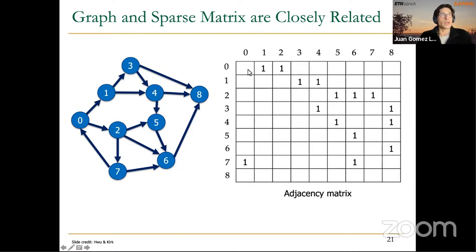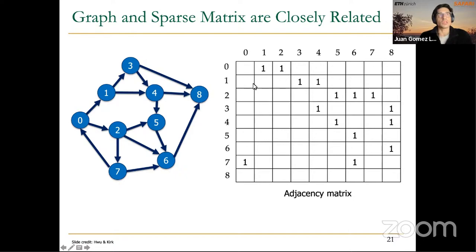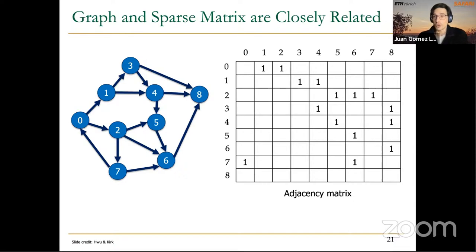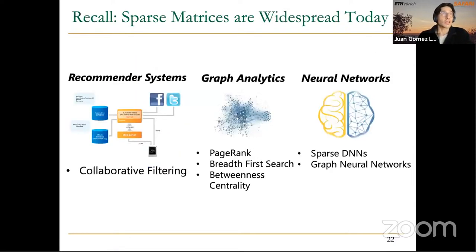That's why in row 0 of the adjacency matrix we have 1 in the positions corresponding to nodes 1 and 2. If we look at node 1, its neighbors are nodes 3 and 4, exactly as shown in row 1 of the adjacency matrix. If you think about this matrix, it's highly sparse — and we are already familiar with sparse matrices and know they are very useful.